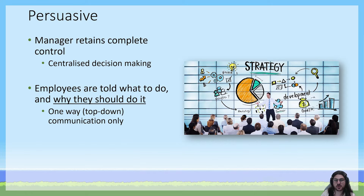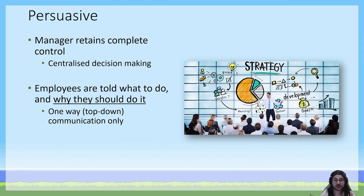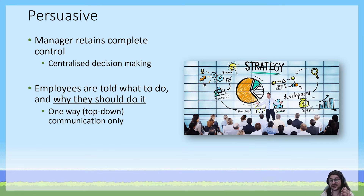The next management style is persuasive management. This can be a little difficult to differentiate from autocratic when looking at a case study, but there's one key distinction. They both use centralized decision making — the manager retains complete control. However, when it comes to communication, it's still one-way top-down communication, but instead of just giving orders, a persuasive manager will try and explain to employees why they should do what they're being told. An autocratic manager might tell you to sit down and shut up; a persuasive manager might say sit down and shut up because they want you listening.